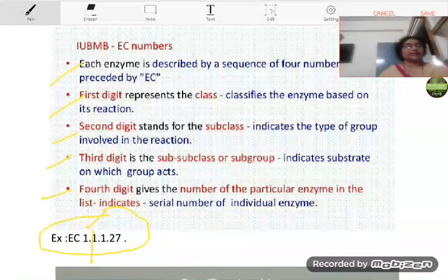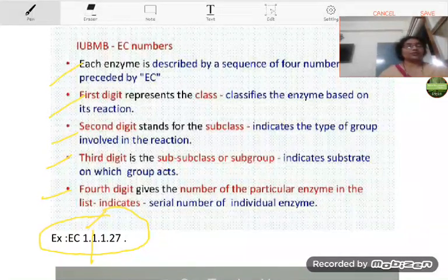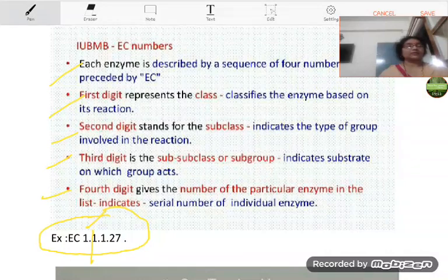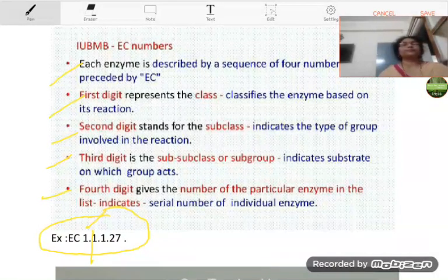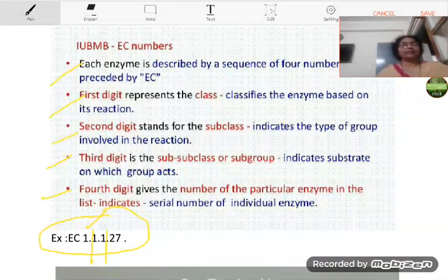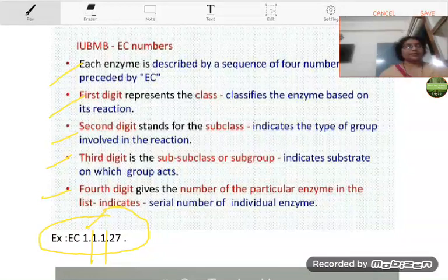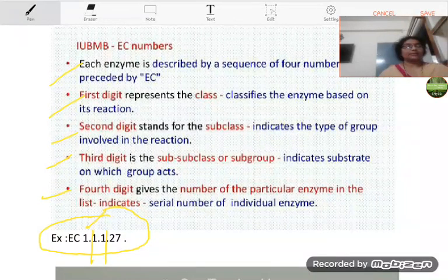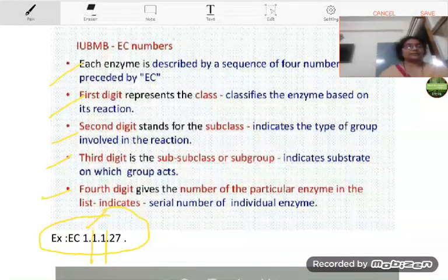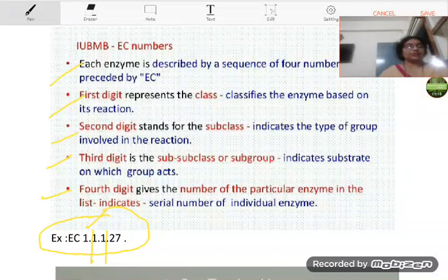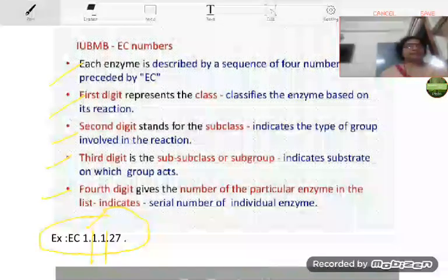This enzyme works on first subclass that is CH-OH group. Third number is also 1. It means sub-subclass and uses NAD as acceptor.